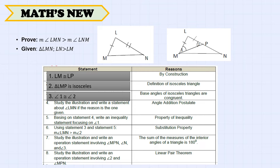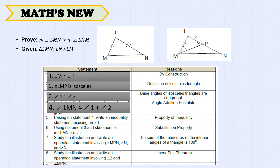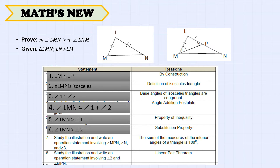From the illustration, angle LMN is equal to angle 1 plus angle 2 by the angle addition postulate. Based on statement 4, angle LMN is greater than angle 1 by the property of inequality. Using statements 3 and 5, the measure of angle LMN is also greater than angle 2 by the substitution property.